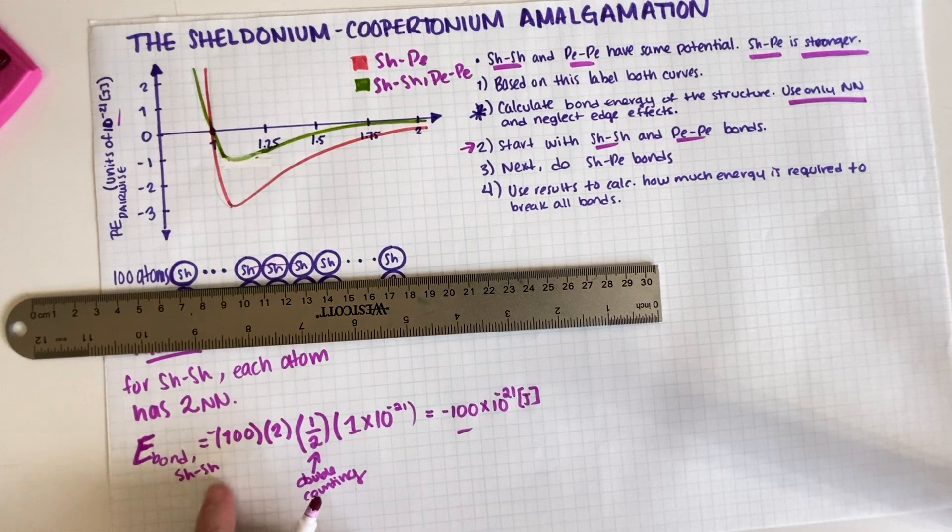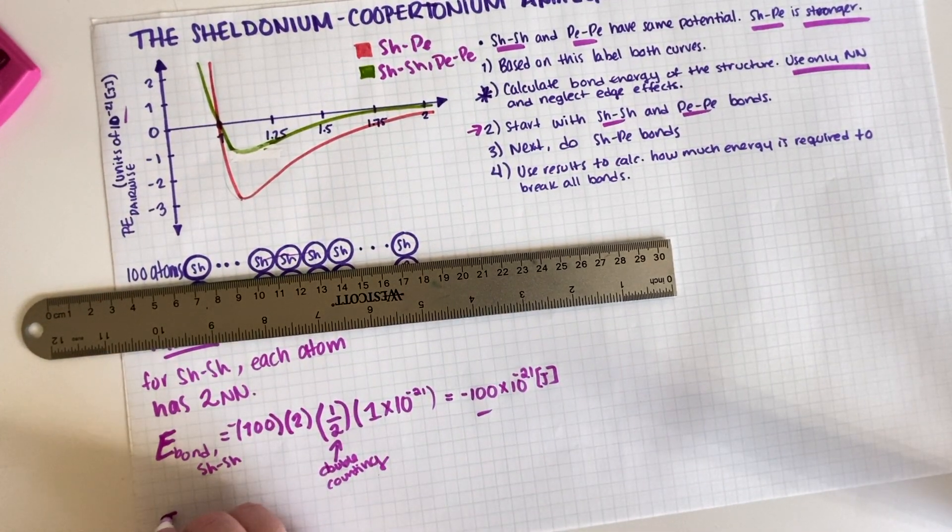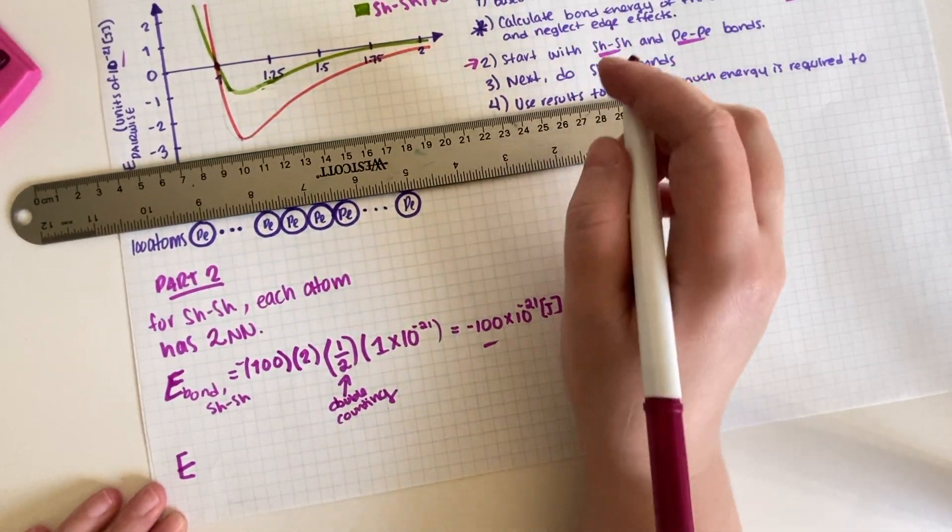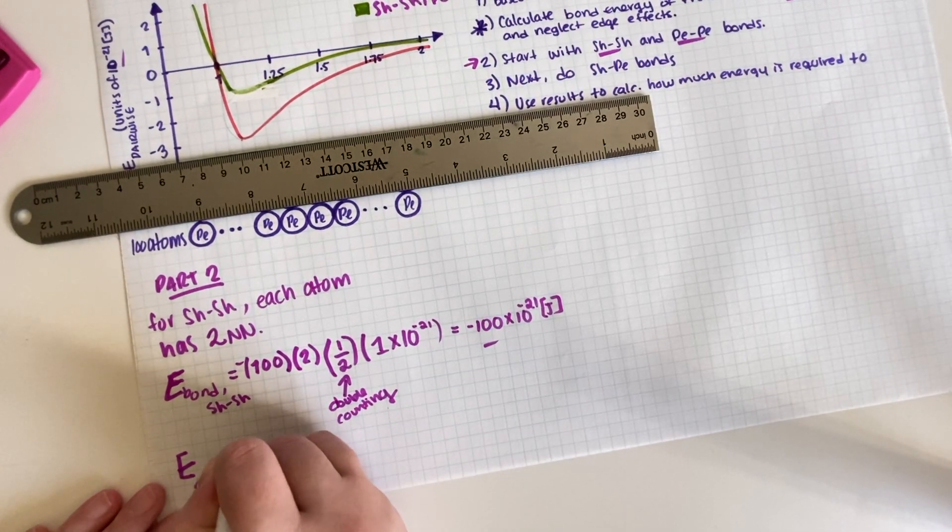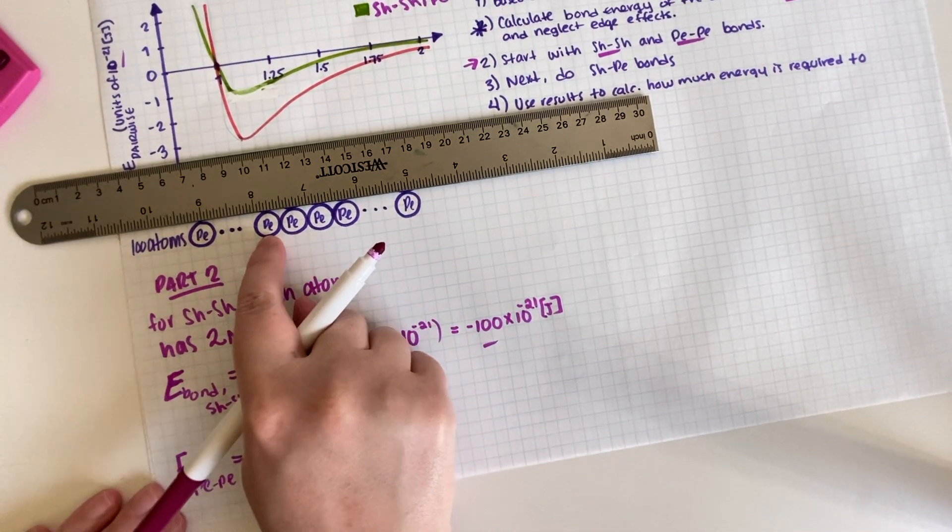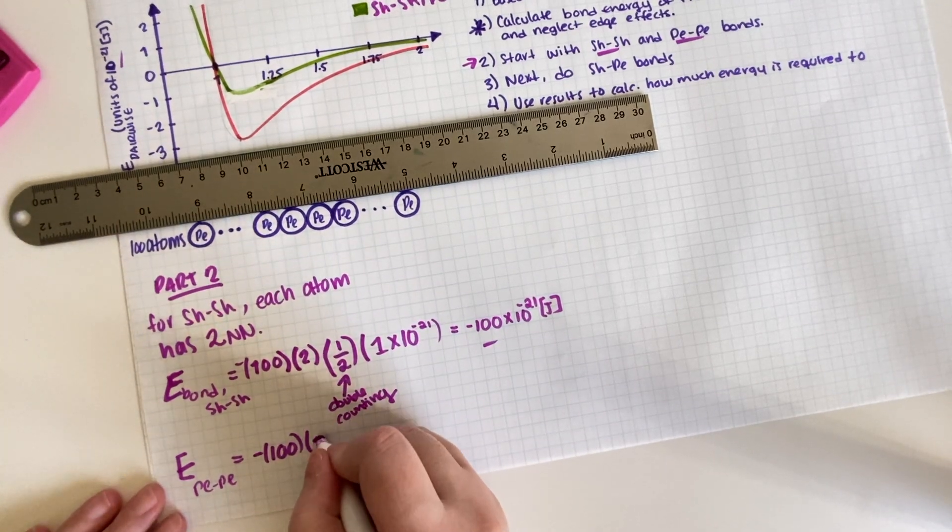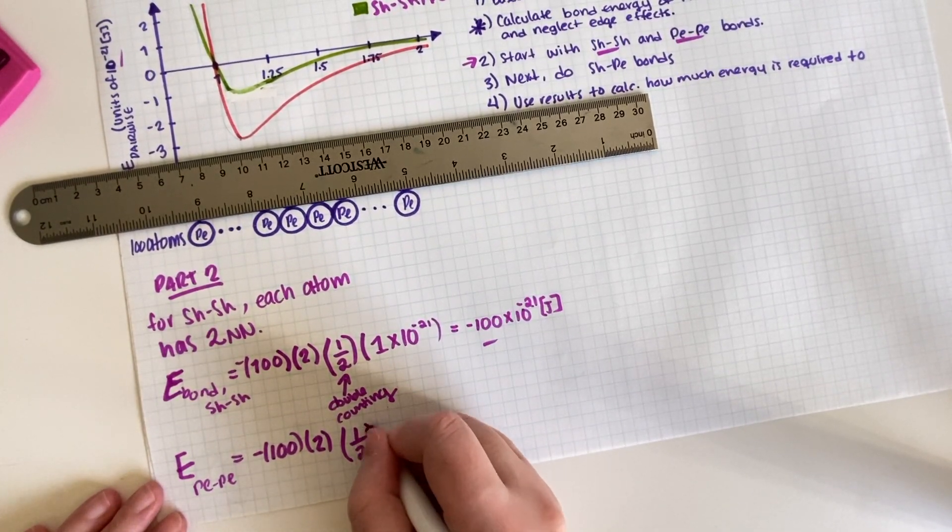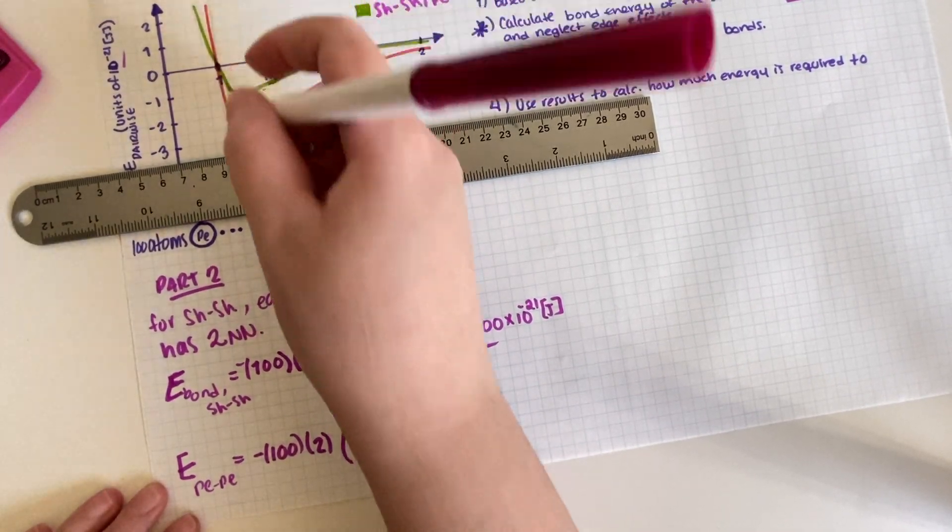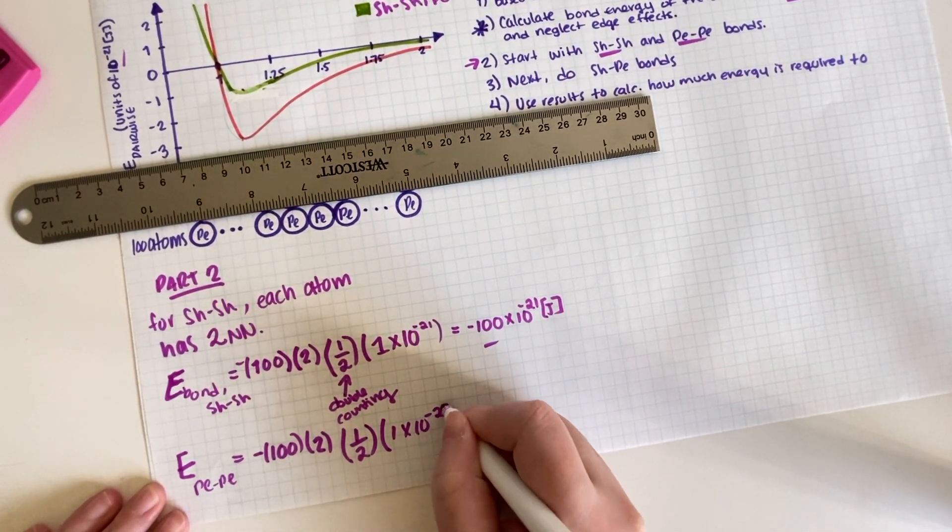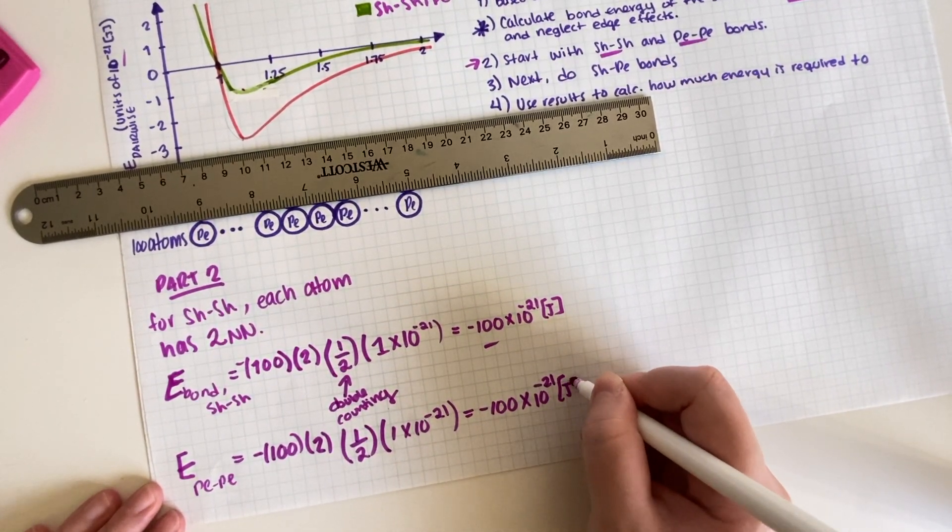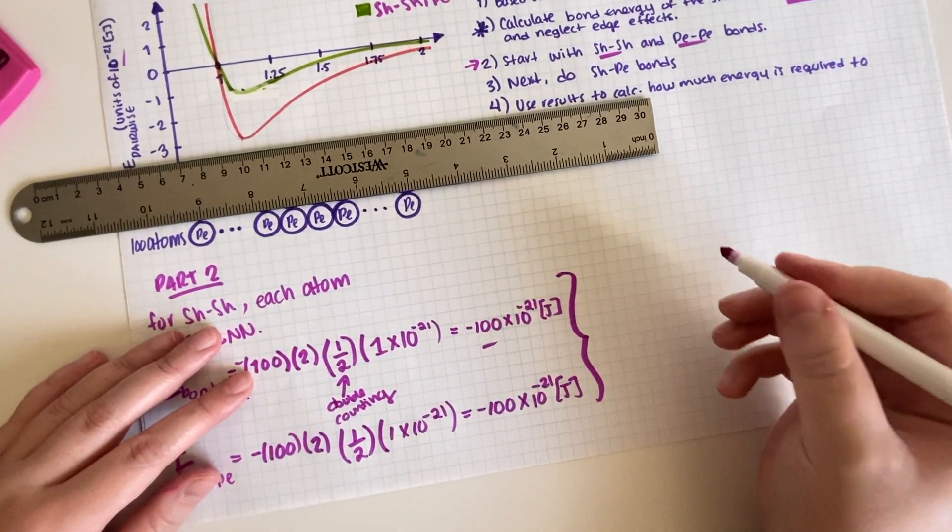But this is only for the Sheldoniums. However, what happens is that if you go ahead and move the ruler in order to do the Coopertoniums, you end up with exactly the same number because this is 100 Coopertoniums, you also have two nearest neighbors, you also have to account for double counting, and the potential well is exactly the same, so we're looking again at this value over here.